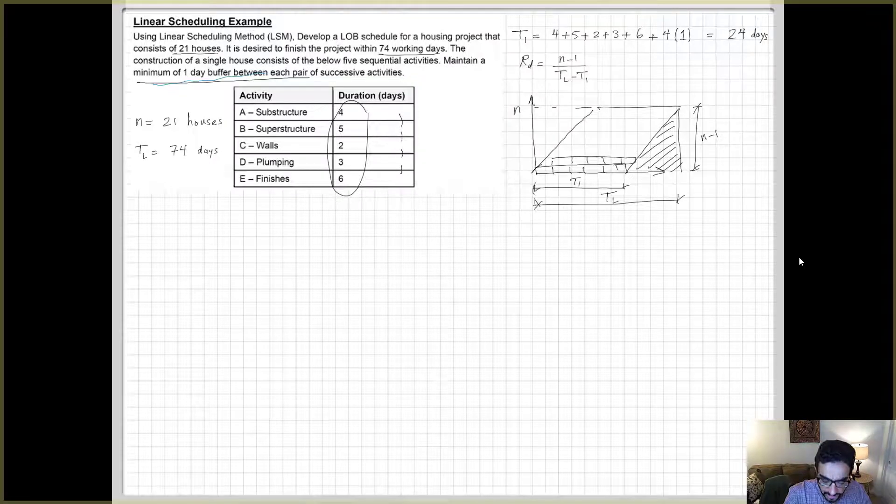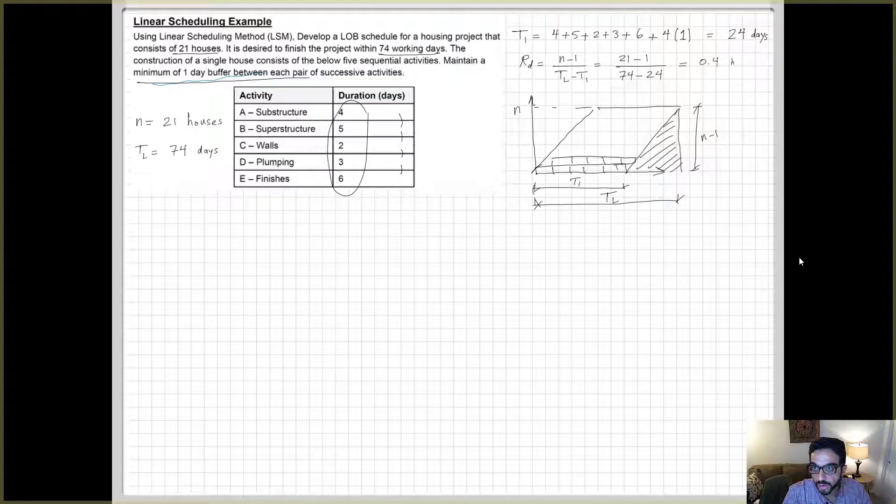So this shaded area through the triangle, the rate of the inclined line here is N minus one divided by TL minus T1. It's a rough estimate of how fast, how many houses I finish per day. Because in the first five days, you don't finish any houses because it takes you 24 days to finish the first house if you do things back to back. But it's a rough indicator of how fast your project moves overall.